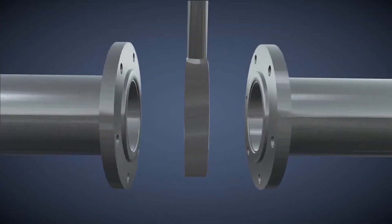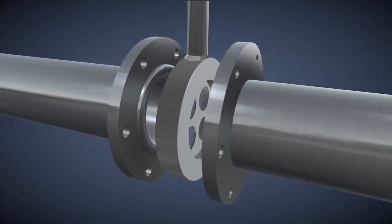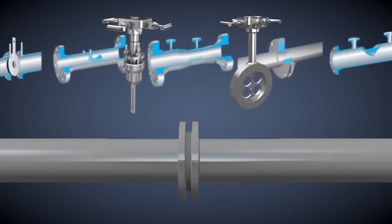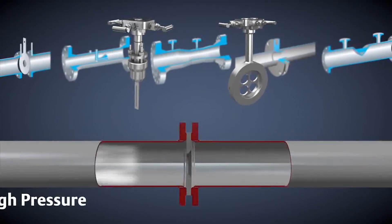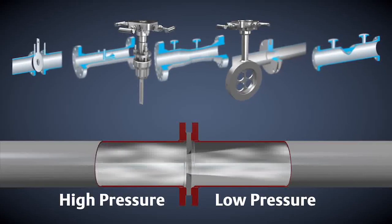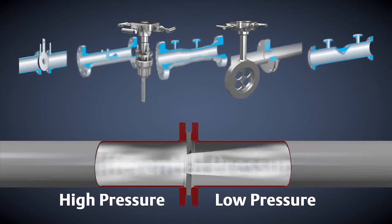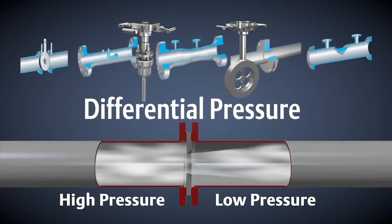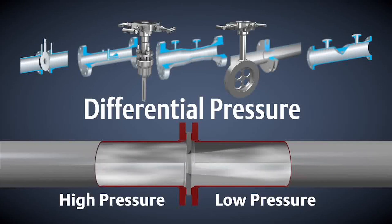Primary element selection is dependent on process conditions. All of these different primary elements have one thing in common: they constrict the flow in a pipe, causing a pressure drop from one side to the other. The difference in pressures is the differential pressure, and the square root of DP is proportional to the flow rate.